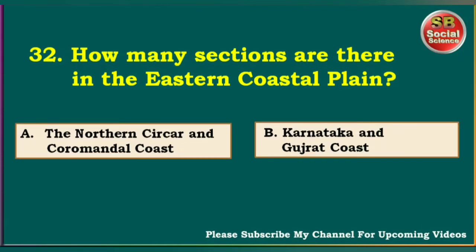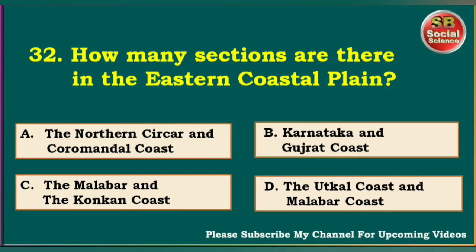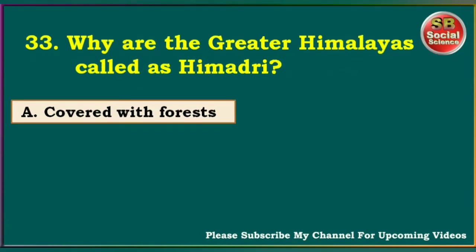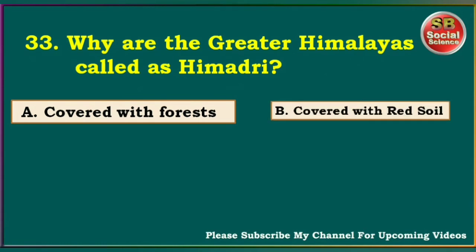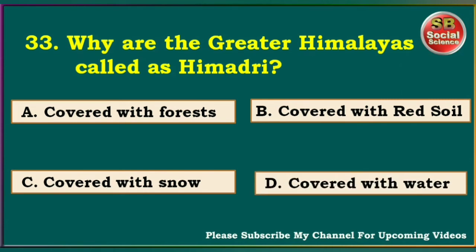The answer is the Northern Sarkars and Coromandel Coast. Why are the Greater Himalayas called Himadri? Because they are covered with forest, covered with red soil, covered with snow, or covered with water. The answer is covered with snow, because these ranges are covered with snow throughout the year. That's why it is called Himadri.